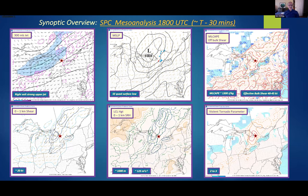This slide gives an overview of the parameter space and synoptic pattern. The star represents the Berry tornado — we're in the right exit of a strong upper-level jet. The upper panel indicates the location of the 10 tornadoes, with the red dot indicating the Berry tornado. All tornadoes occurred south and east of the surface low. Bulk shear, CAPE, and low-level helicity were all there — not a gangbuster event, but everything was consistent with a fairly significant tornadic outbreak.